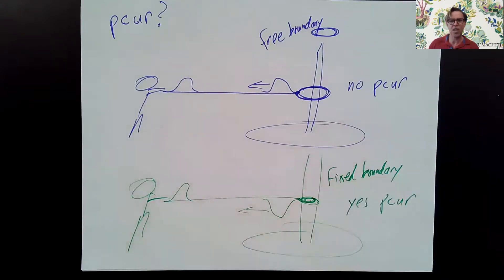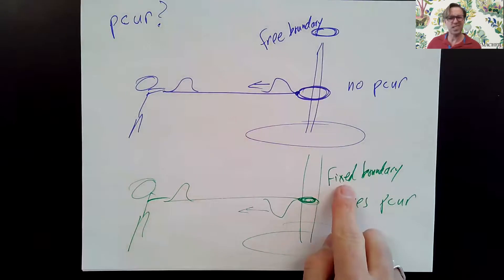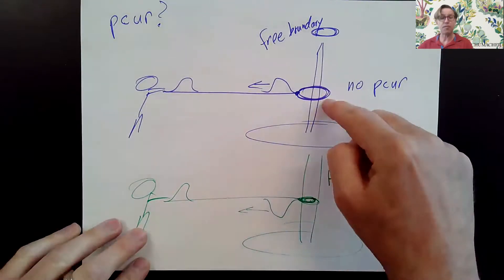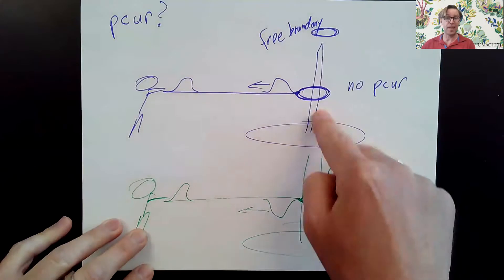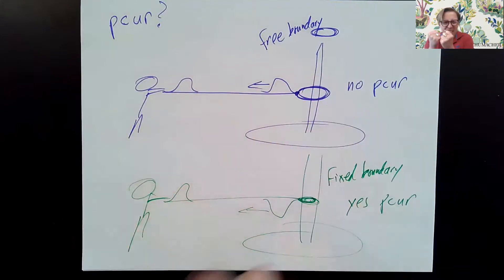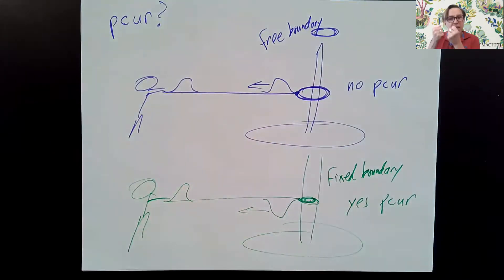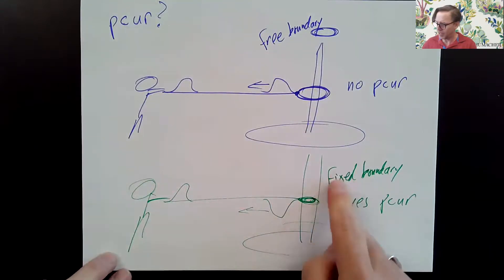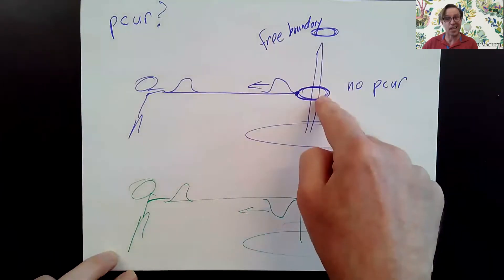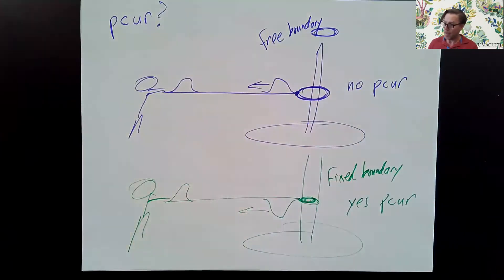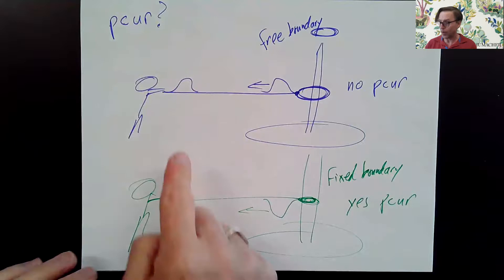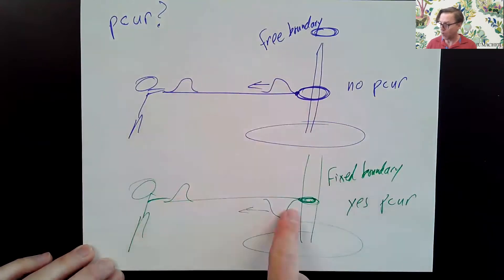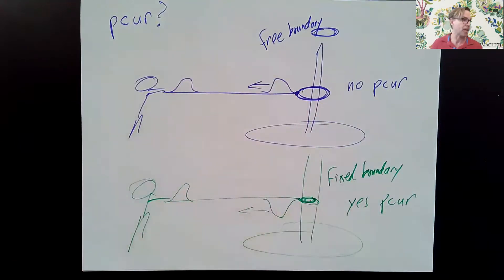Lots of vocabulary here. Free doesn't refer to cost, and fixed doesn't mean not broken. Free means free to move, able to move. Fixed means fixed in place, firmly in place, not going to move. That's what leads to those situations where we have no phase change upon reflection or where we have a phase change upon reflection, and this comes up in the problems we're going to work on this week.